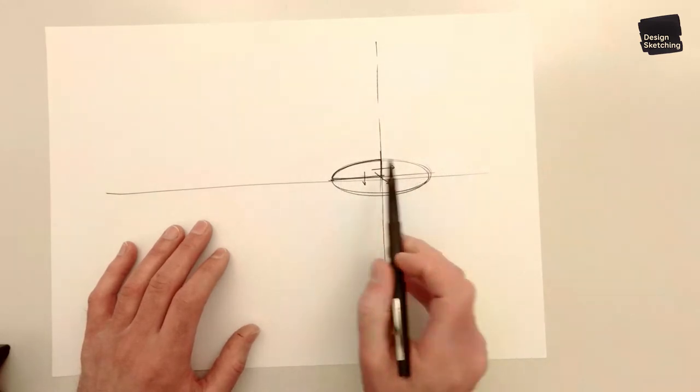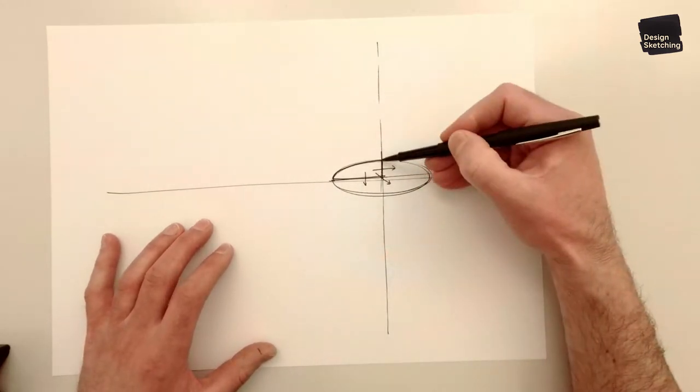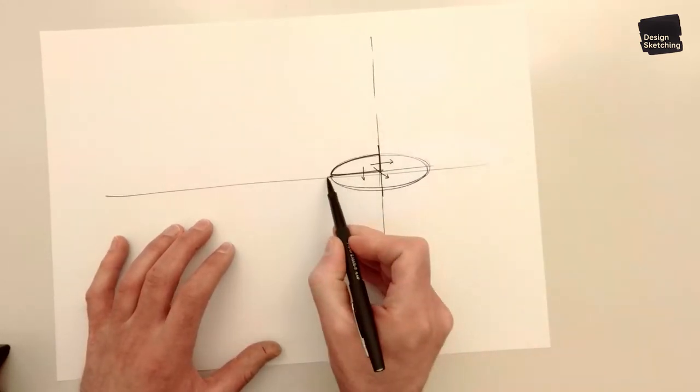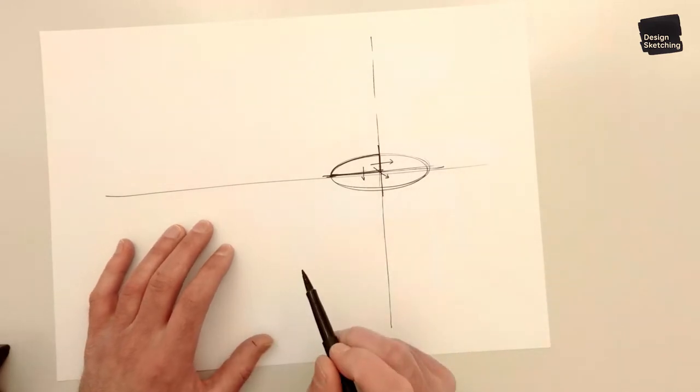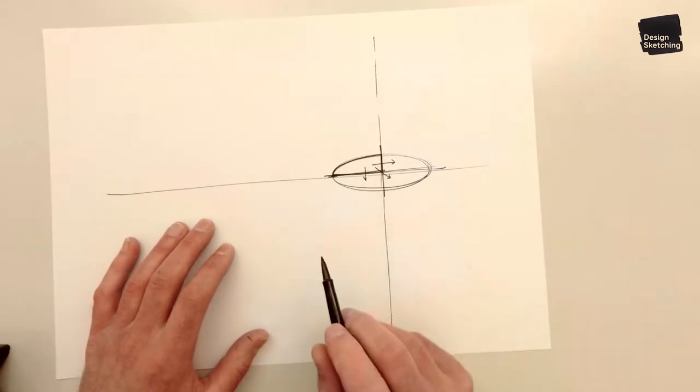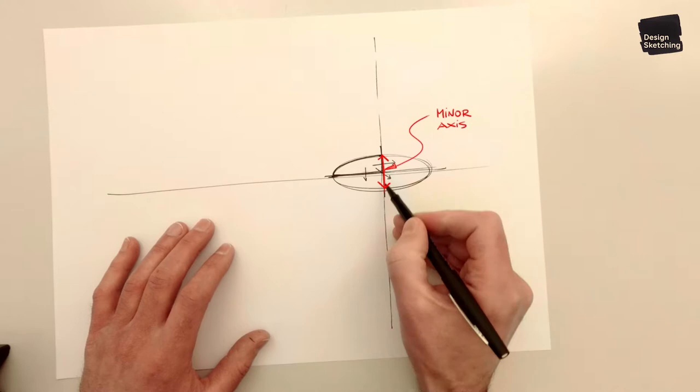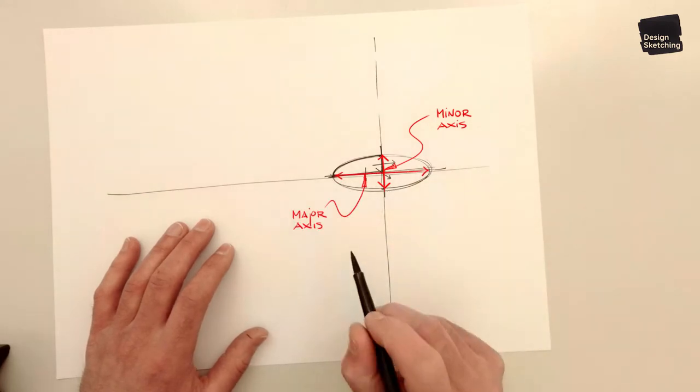And that's important to notice that the ellipse has a center line, actually two center lines, horizontal and vertical, and they're called the minor and major axis. This is the minor axis and this is the major axis.